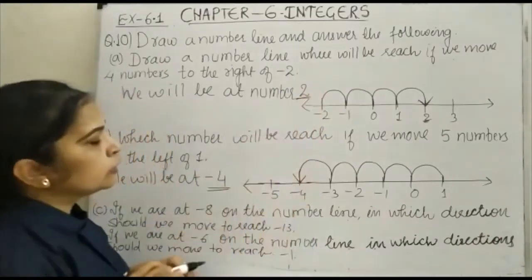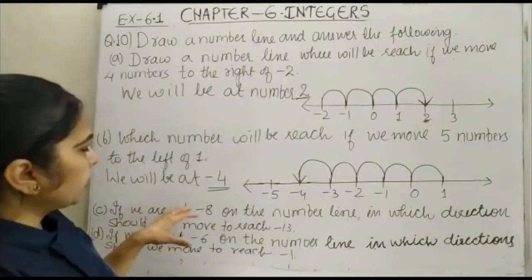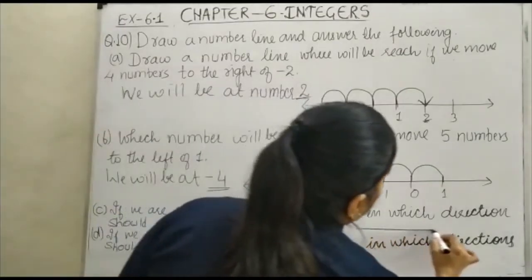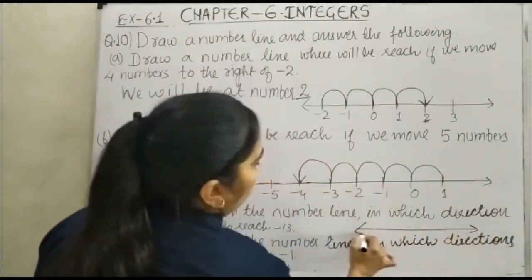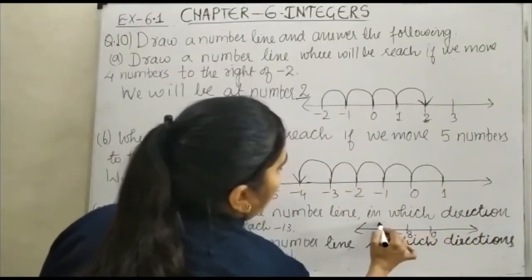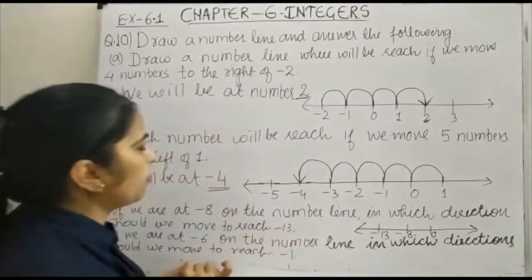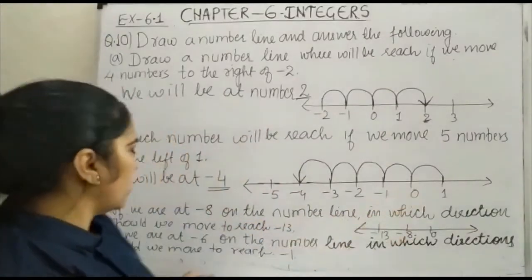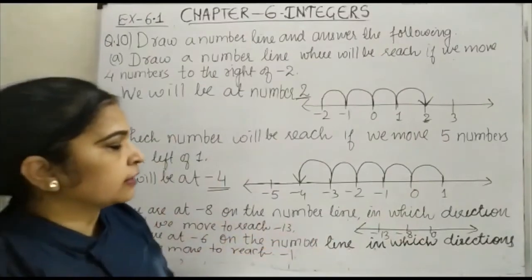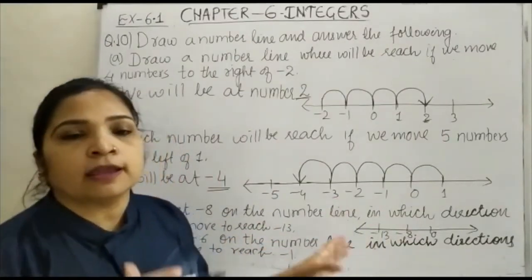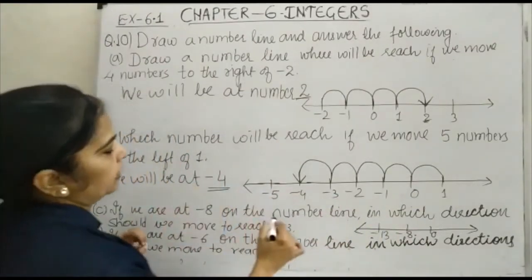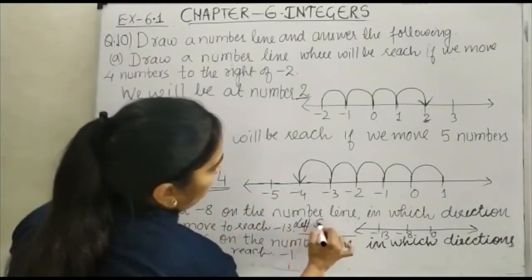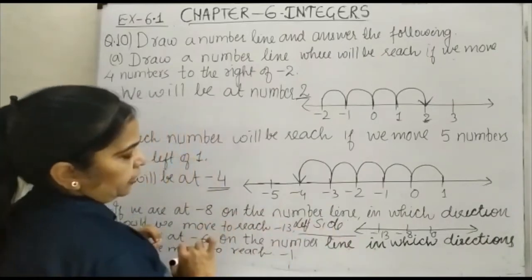Now, if we are at minus 8 on the number line, in which direction should we move to reach minus 13? Since minus 13 is to the left of minus 8 on the number line, your answer will be the left side.